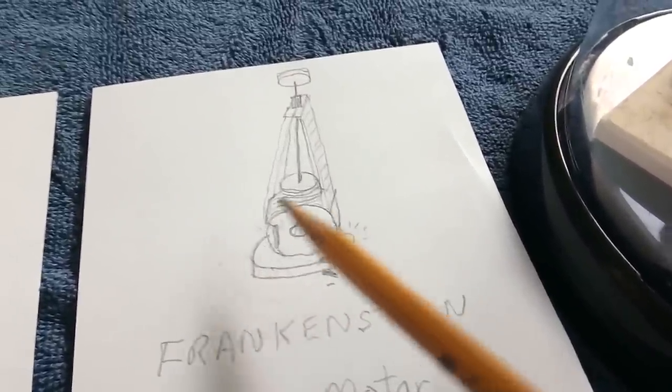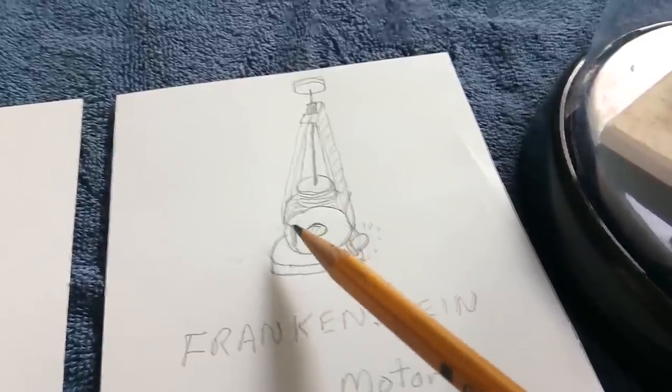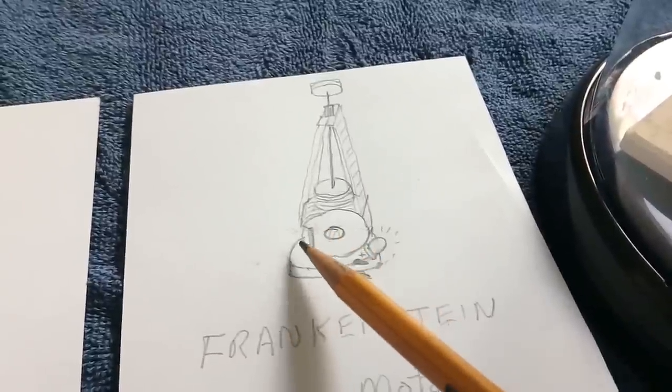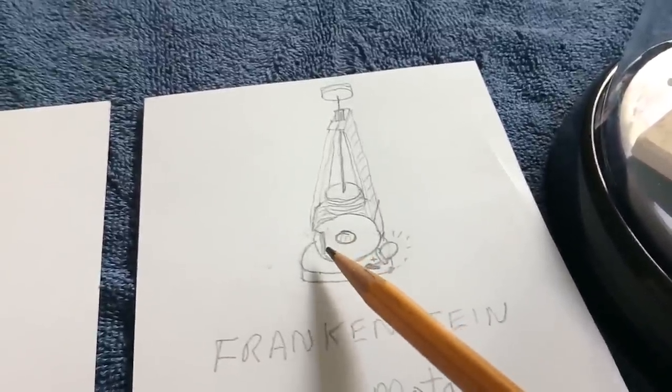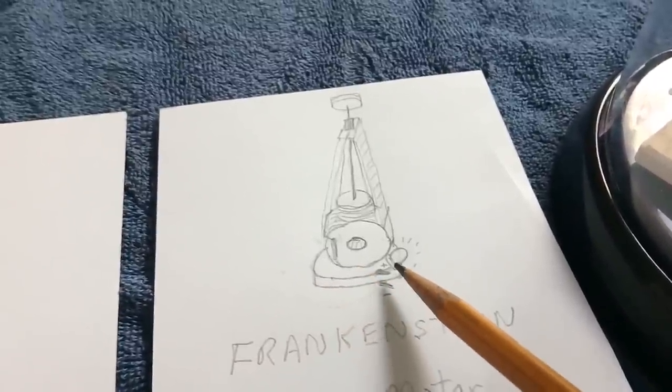There's a coil of wire—it's 30 gauge on a plastic sewing machine bobbin, no core. There's a reed switch right here on the side of the coil that gets activated by a magnet.